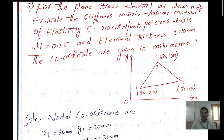The coordinates are given in millimeters. We have the X coordinate as well as the Y coordinate for a three-noded triangle element. At node 1: X1 is 30, Y1 is 20. At node 2: X2 is 80, Y2 is 20. At node 3: X3 is 50 and Y3 is 100.